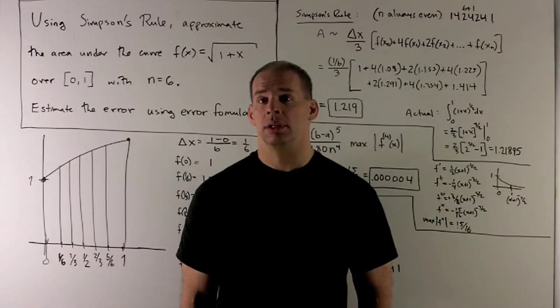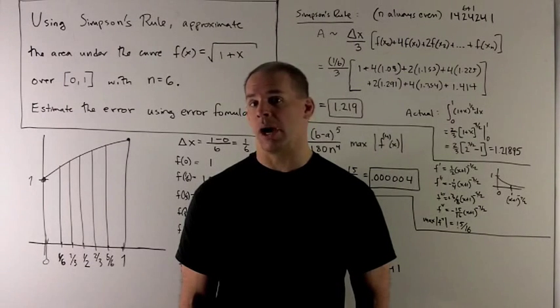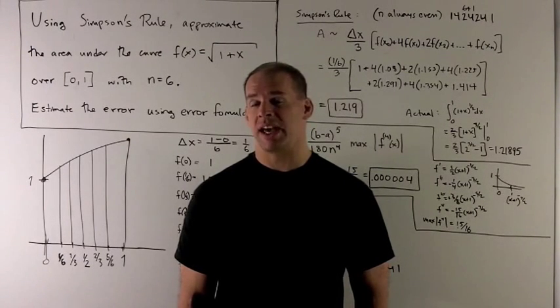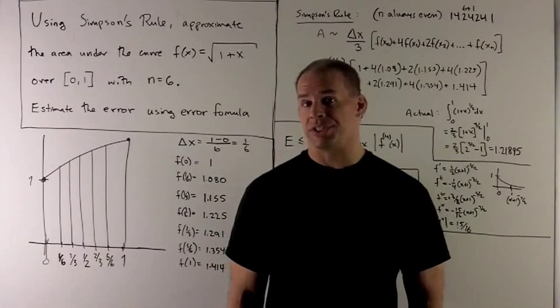Using Simpson's rule, approximate the area under the curve f(x) equals square root of 1 plus x over the interval from 0 to 1 with n equal to 6.